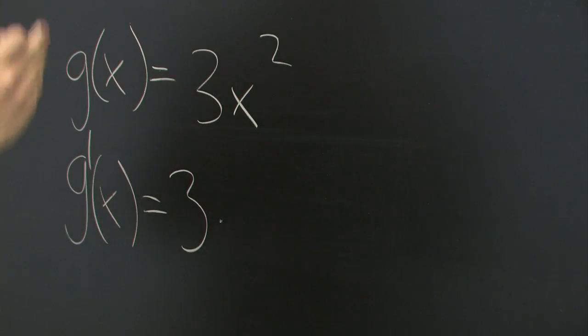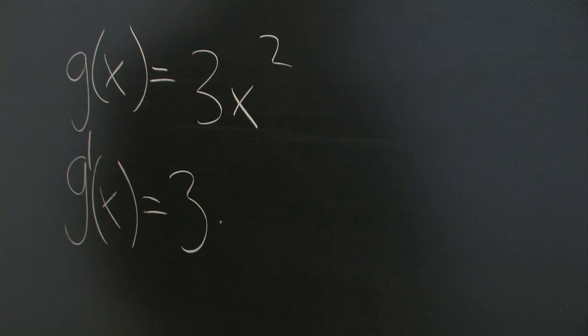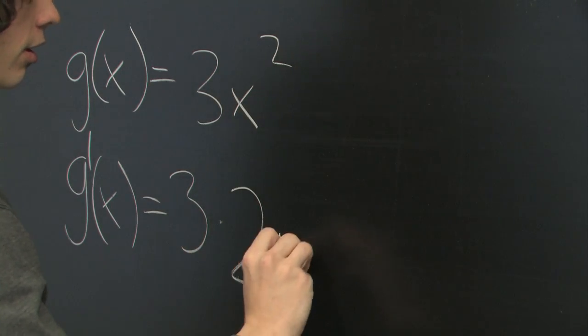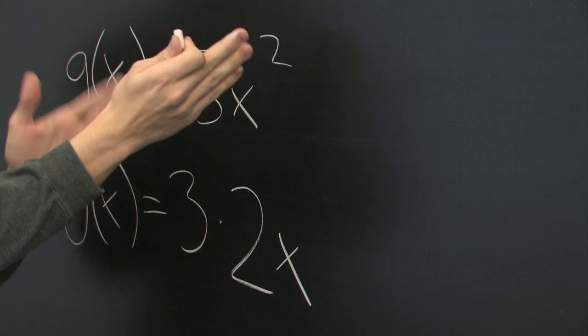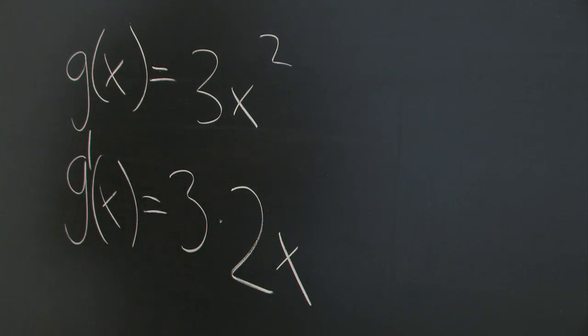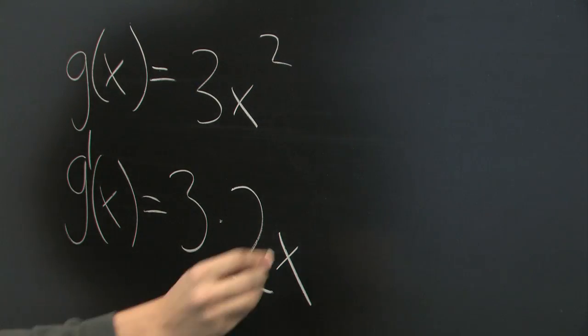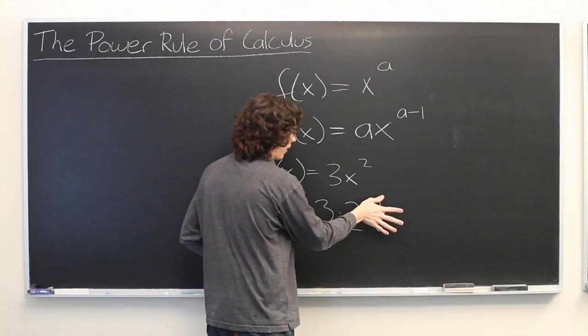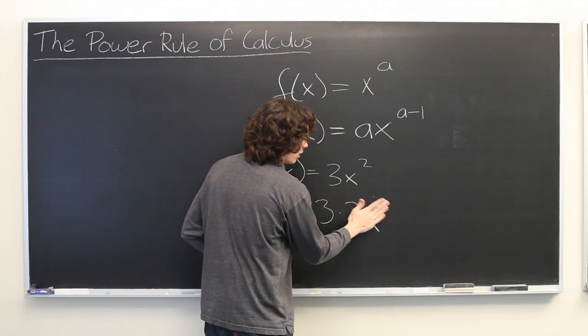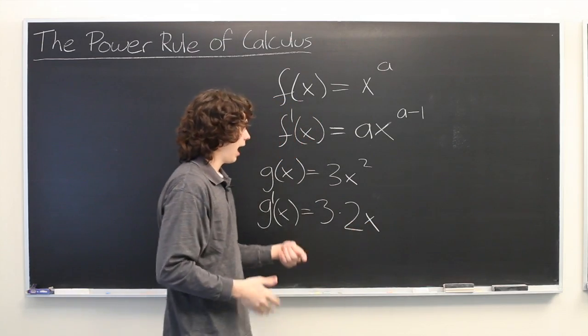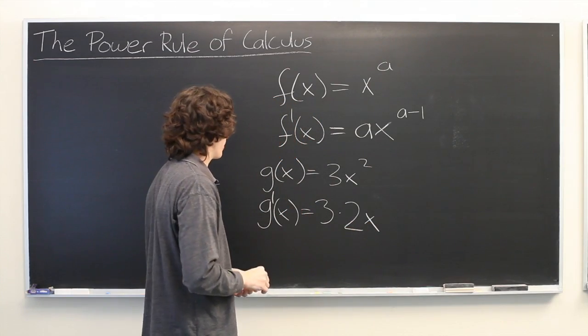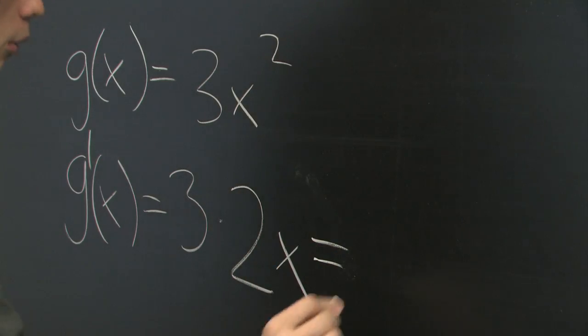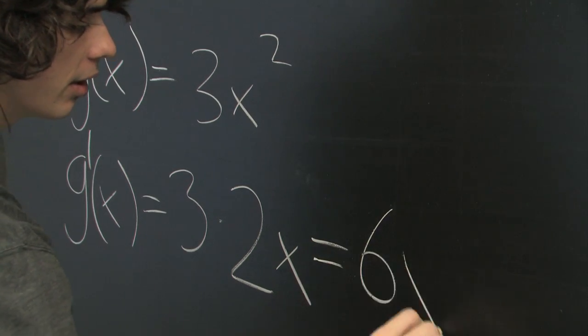So we just use the same formula we had before. Bring down the exponent, 2, times x to the exponent minus 1. 2 minus 1 is 1. So you can write this x to the first power but frequently we just leave out the 1. It is understood that x simply means x to the first power. And then we'll multiply out these constants and we get 6x.